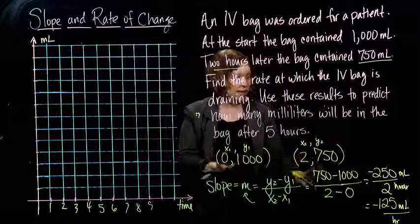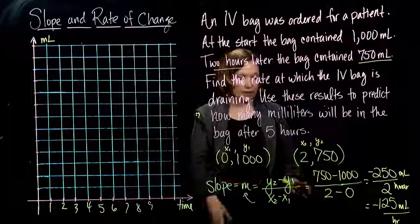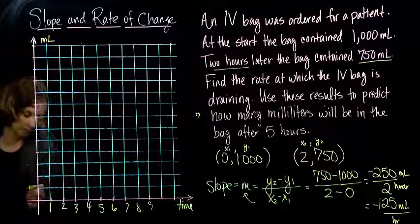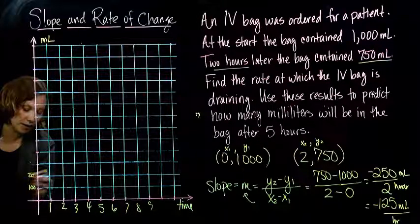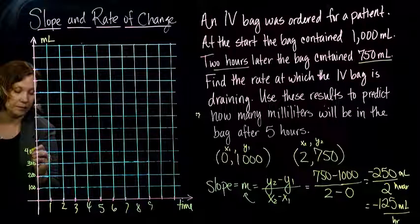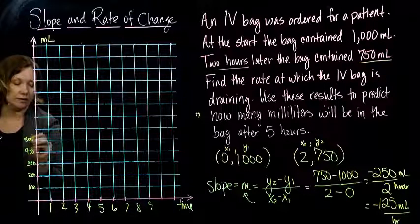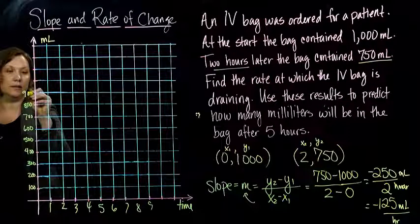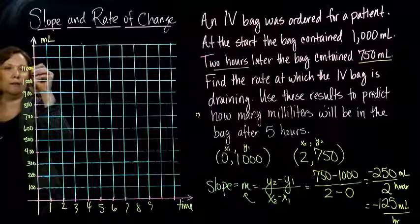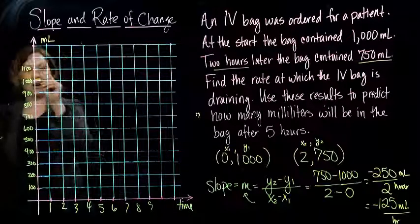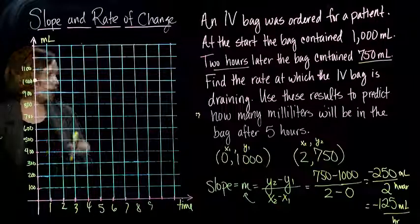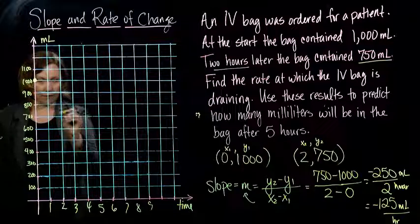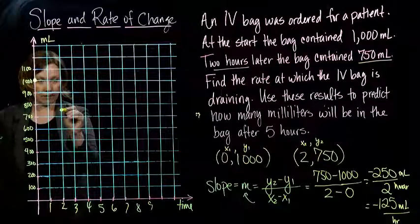So let's see if we got the right thing if we graph it. So again, I'm going to make my vertical axis go by hundreds, okay, so I'm at 0, 1,000, so I put a dot there.